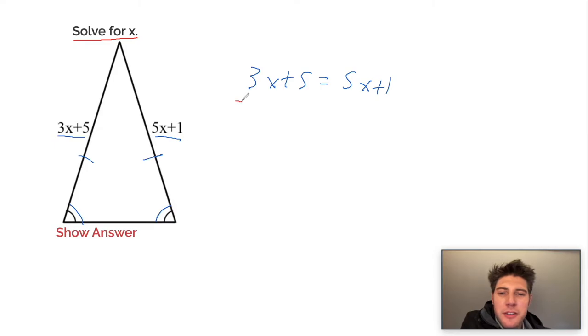So I'm going to subtract that from both sides. The reason I do the smaller one is because when I do 5x minus 3x, I get positive 2x and I prefer positive numbers over negative numbers. And then this goes away. So we're left with just 5 on the left side and we have 2x plus 1. Now we only have one side that contains an x.